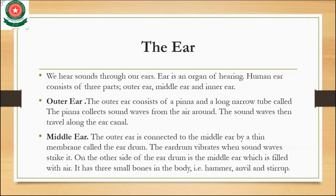Next is the middle ear. The outer ear is connected to the middle ear by a thin membrane called the eardrum. The eardrum vibrates when sound waves strike it. On the other side, the middle ear is filled with air. It has the three smallest bones in the body: the hammer, anvil, and stirrup.